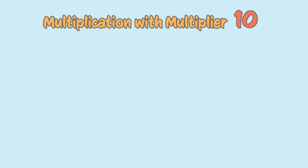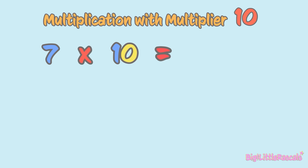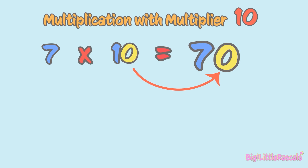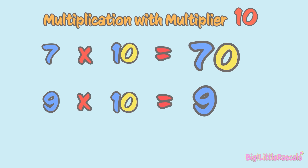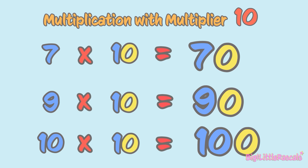Now, let's jump to multiplication with multiplier 10. When you multiply a number by 10, you need to add a zero at the end of that number. For example, 7 multiplied by 10: write number 7, then add 0 at the back, which equals 70. Next, 9 times 10 equals 90, and 10 times 10 equals 100. Got it?